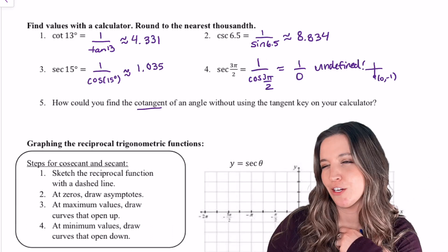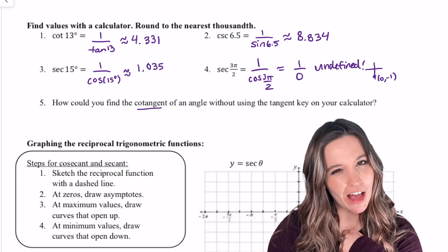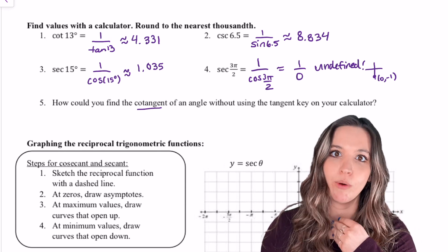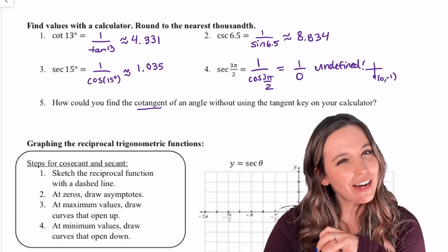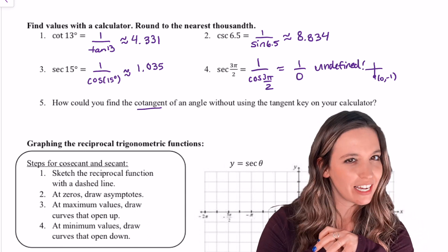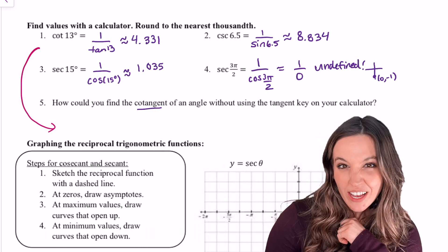Take a moment to check your calculator work. If your values aren't the same, double check that you're in the right mode on your calculator. Look at that last question. How can I find cotangent without using the tangent key on my calculator? Cosine over sine.